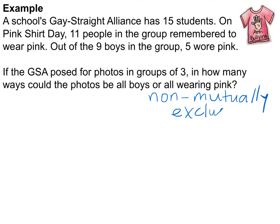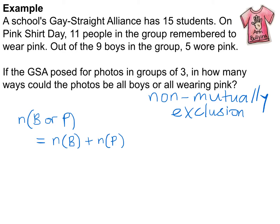Because the events are non-mutually exclusive, we need to avoid double counting. We use the principle of inclusion and exclusion. The number of arrangements of boys OR people wearing pink equals the number of arrangements for boys, plus the number of arrangements for people wearing pink, minus the number of arrangements for boys AND wearing pink.